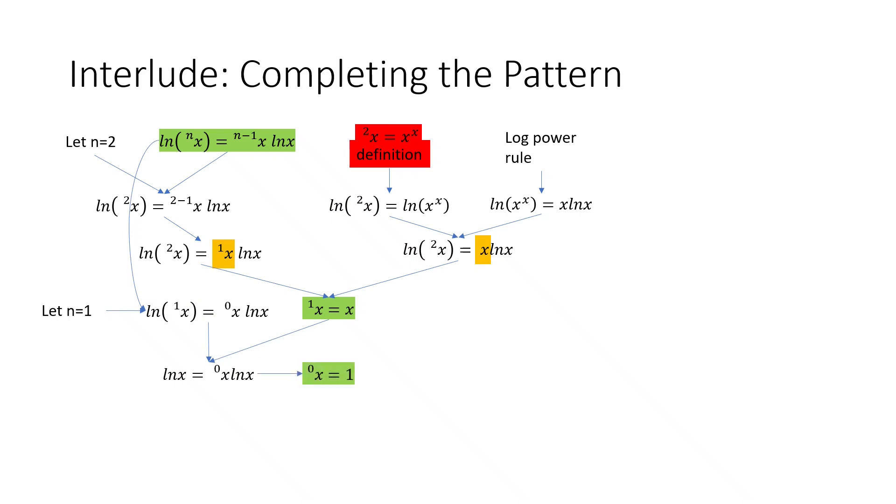So there it is. The first tetration of x is just x. And the 0th tetration of x is 1. As we might expect. Now we return to the previous slide.